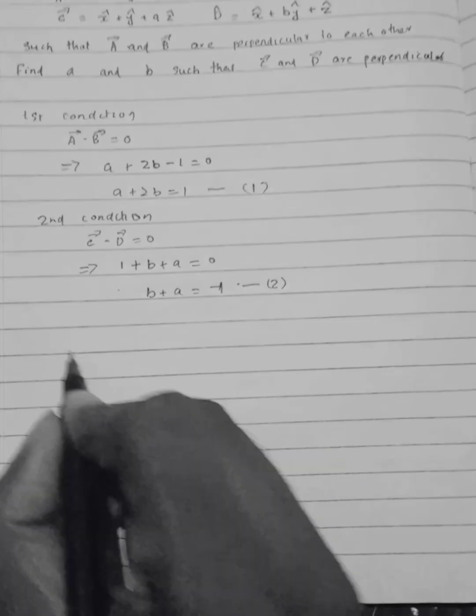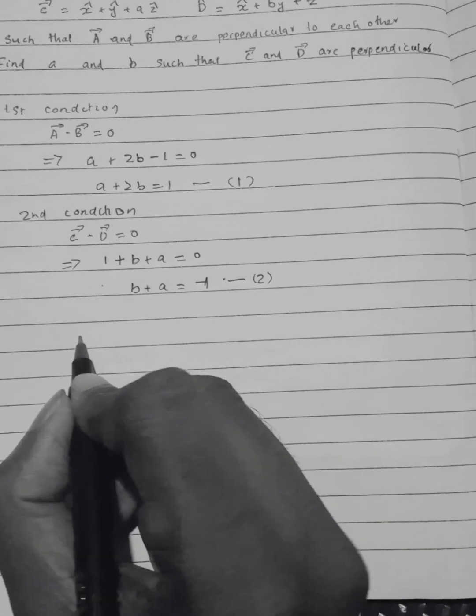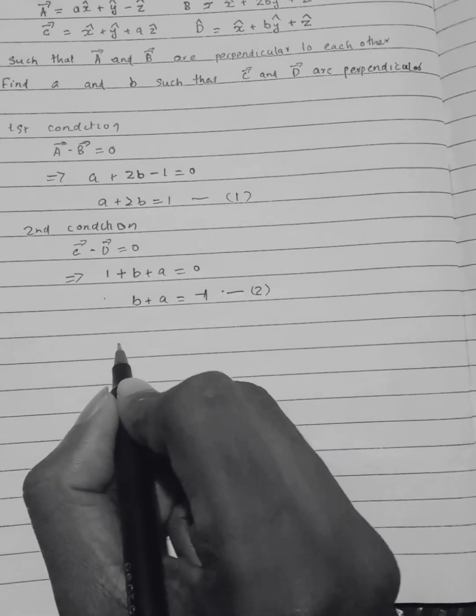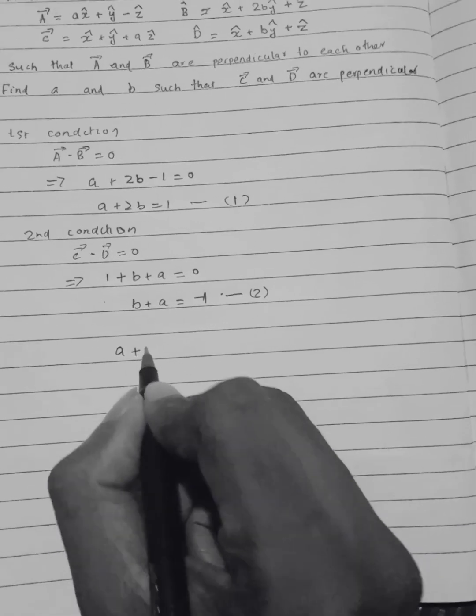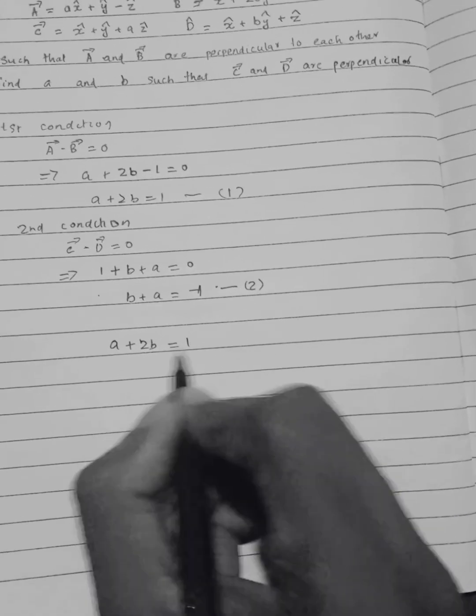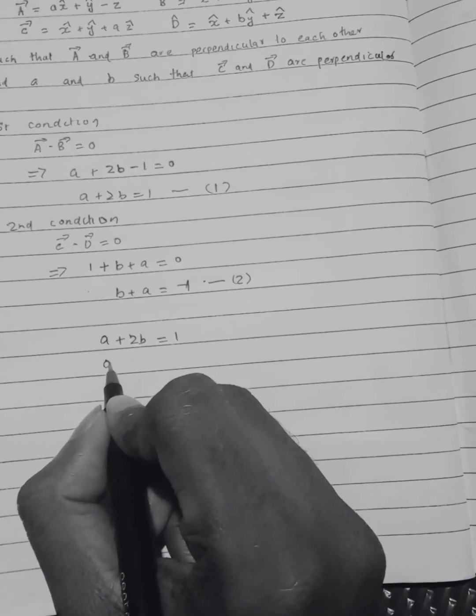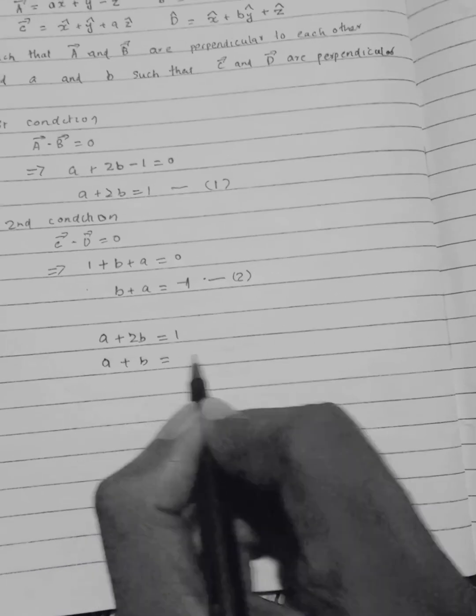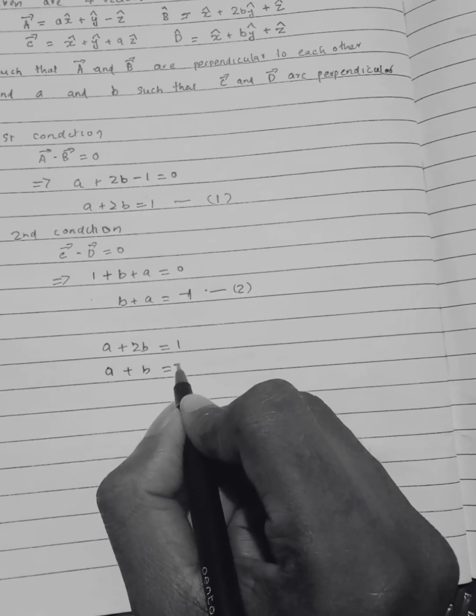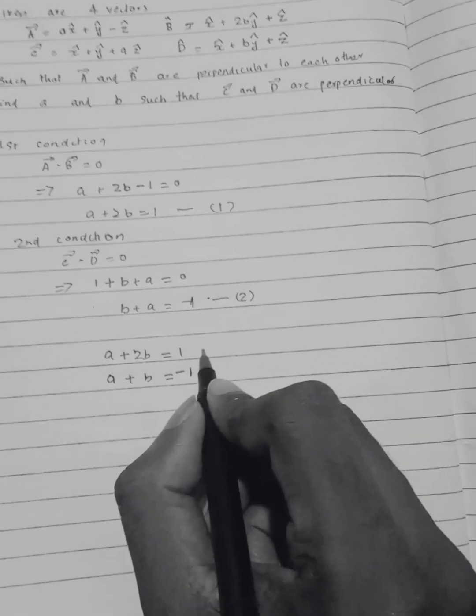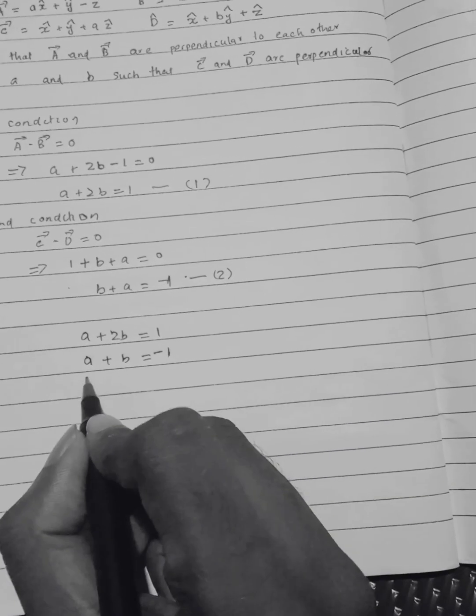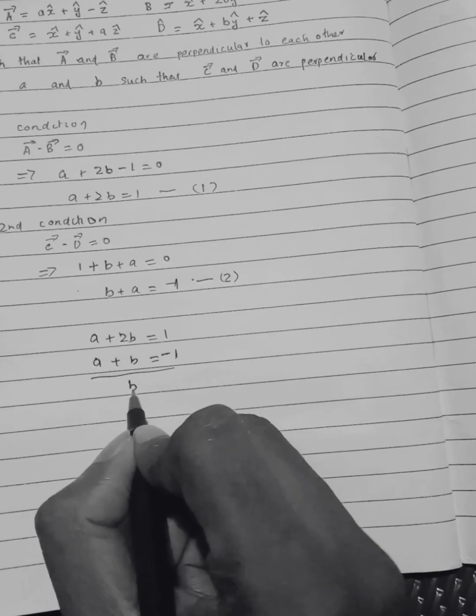By equating equations 1 and 2, we can solve for b and a. Subtracting the equations, we get the values for b and a.